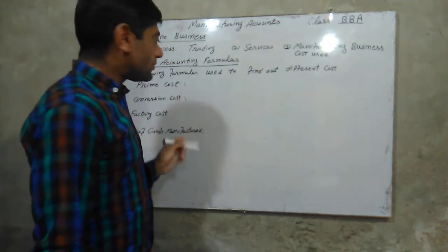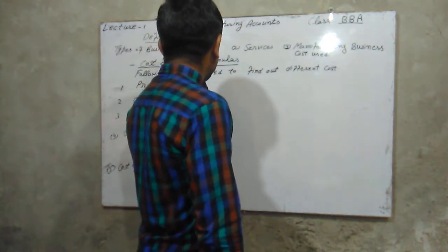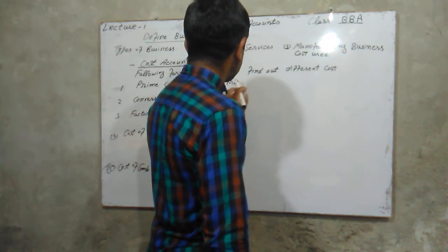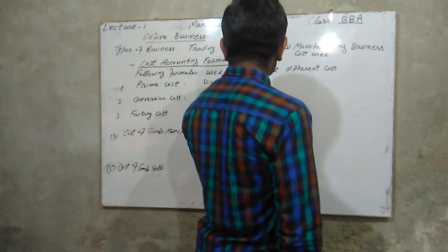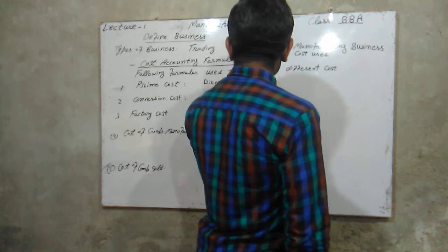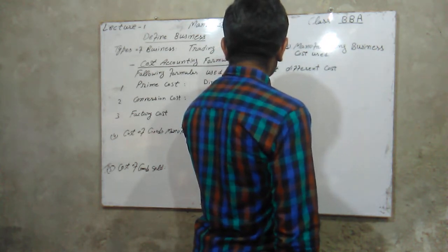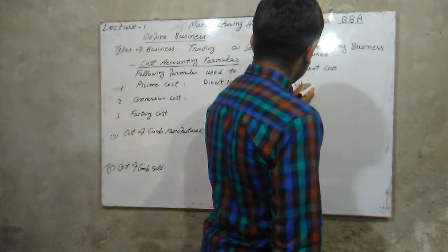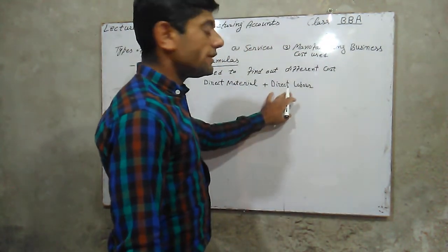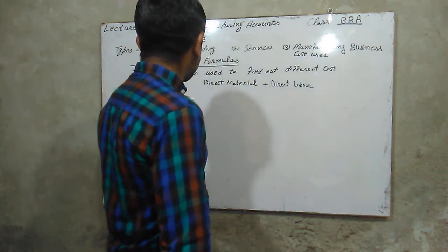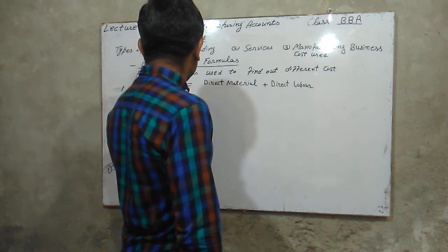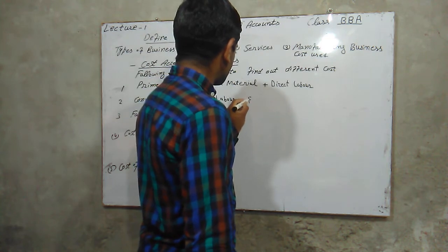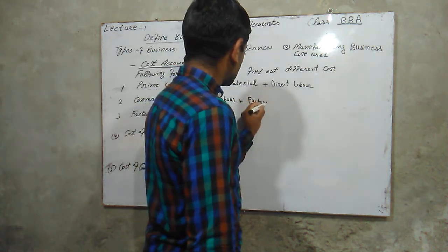The first formula is prime cost. Prime cost equals direct material used in the production of goods plus direct labor involved in the production of goods. Conversion cost equals direct labor plus factory overhead.